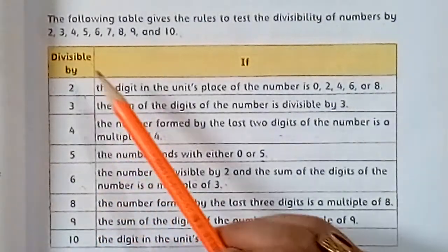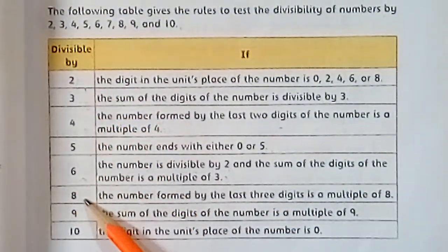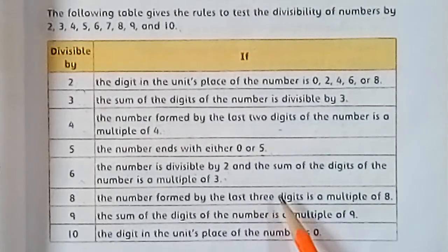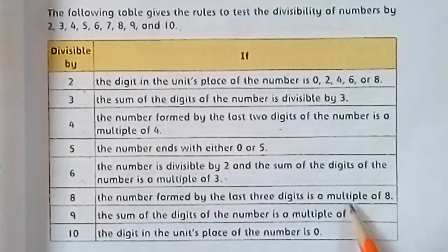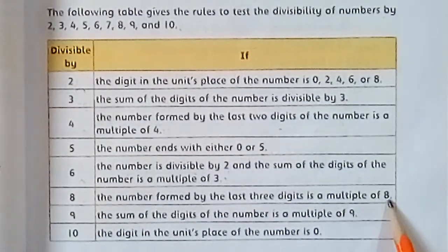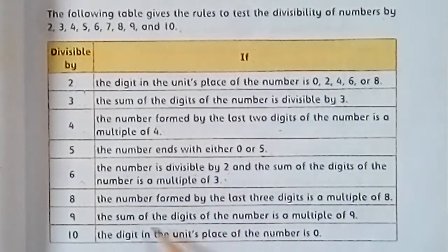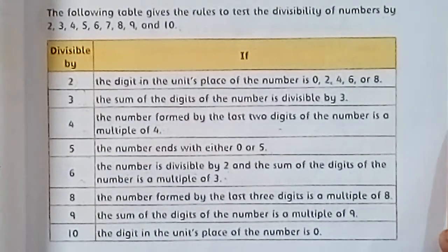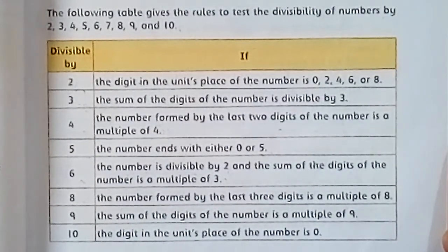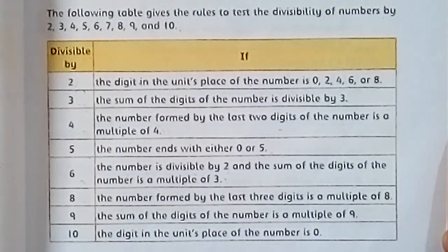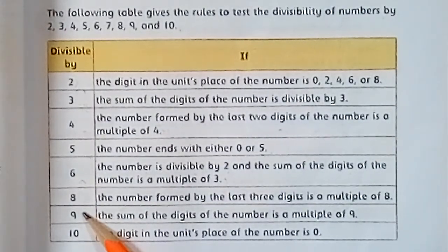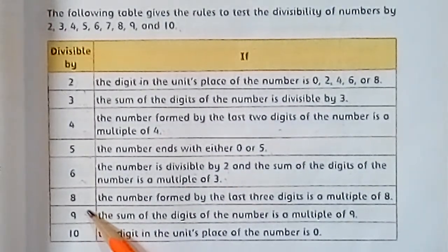The next one is divisible by 8. The number formed by the last three digits must be a multiple of 8. If the last three digits form a multiple of 8, we can say the original number is divisible by 8.